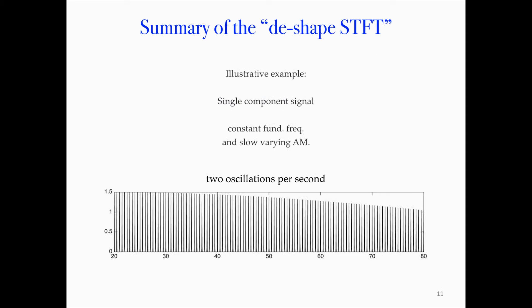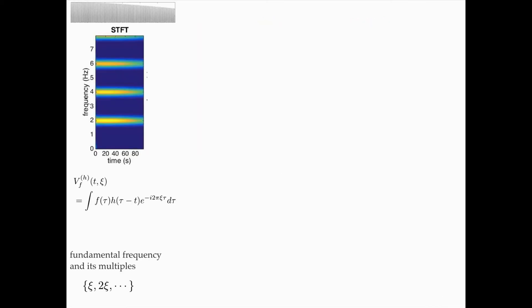I want to show you the algorithm using a simple example — a single component signal where the fundamental frequency is constant at two hertz, but the amplitude changes. The signal oscillates twice per second and has non-sinusoidal oscillation. Short-time Fourier transform is your best friend when you have a time series. You take a Gaussian window h, mount it at time t, crop the signal, and evaluate the Fourier transform. Taking the absolute value squared gives you the power spectrum.